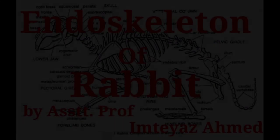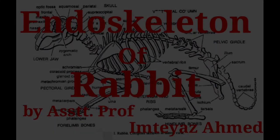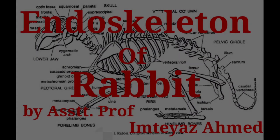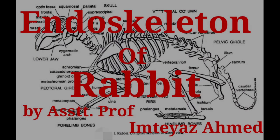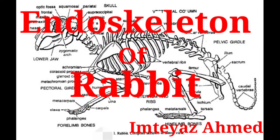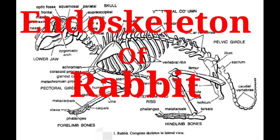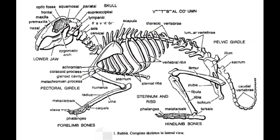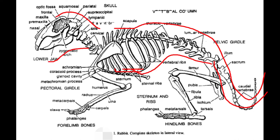Hello and welcome to the present lecture on endoskeleton of rabbit. Rabbit is a vertebrate and it comes under class Mammalia. Endoskeleton of rabbit is made chiefly of bones. Like other vertebrates, the endoskeleton of rabbit also has two major divisions: axial skeleton and appendicular skeleton. Axial skeleton lies along the longitudinal axis of the body.